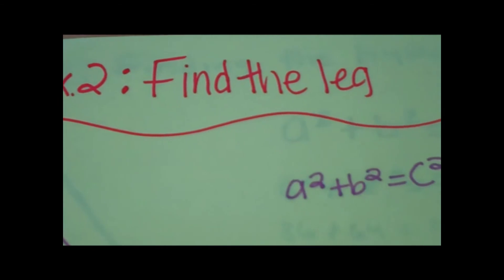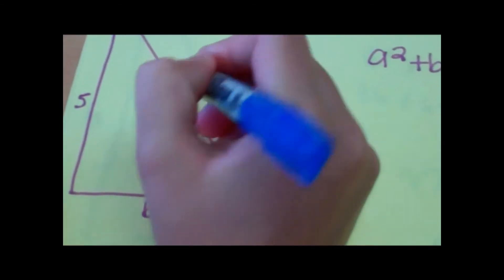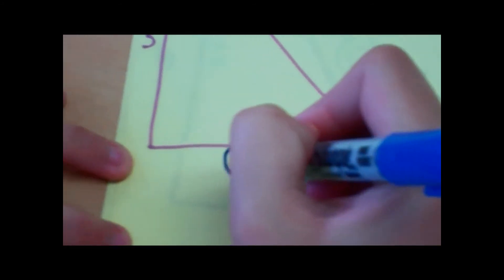Example 2, finding the leg. We already have one leg, and we know this is the hypotenuse. So we're trying to find B, the second leg.